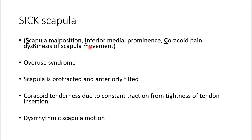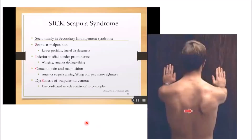SICK scapula is an overuse syndrome where the scapula is protracted and anteriorly tilted, with coracoid tenderness and discrete scapular dyskinesia. In the picture, you can see the scapular malposition on the right side, with the inferior medial border prominent. On palpation, there is coracoid pain, and on movement assessment there is dyskinesia of scapular motion.